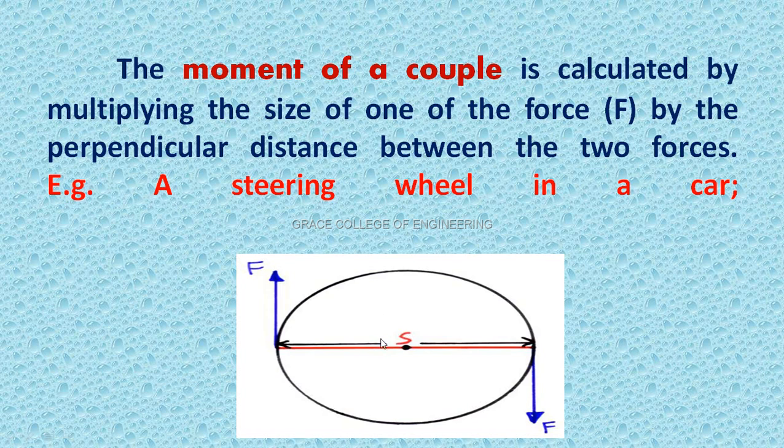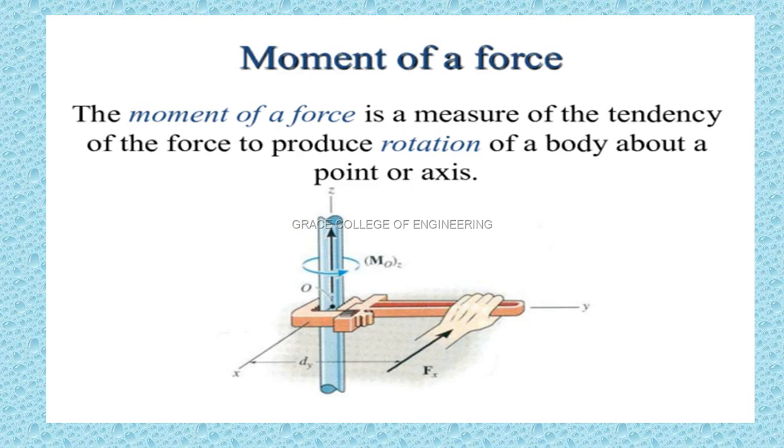This is an example: car steering wheel. The distance is X. The steering wheel turns, this is a moment of a couple. Magnitude equal, direction opposite.